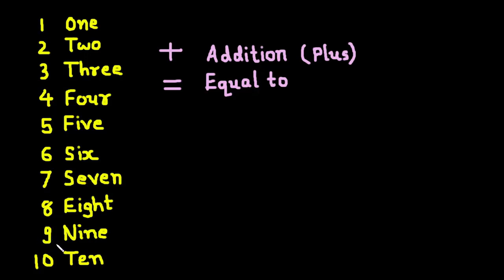1 to 9 are single digit numbers. And in 10 we have two digits. This 0 is on the 1's place or unit place, and this 1 is on the 10's place — unit place and 10's place. There are two place values in two-digit numbers.